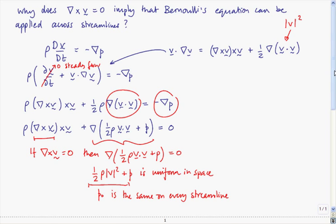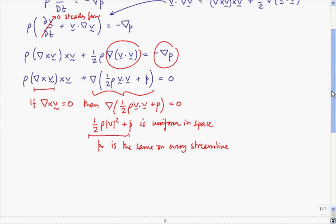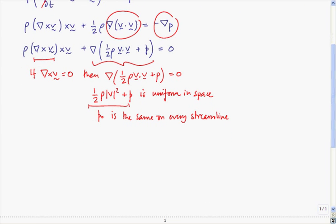Actually, you can go even further than this. Let's imagine now that curl of v is not equal to zero. In this case, the term on the left-hand side in the above equation is non-zero. But we know that we can apply Bernoulli along streamlines.